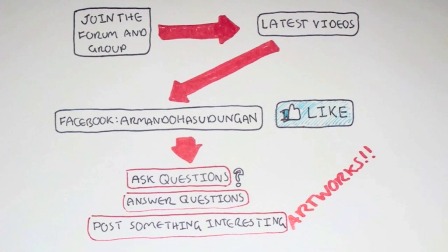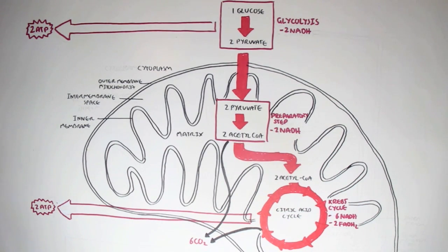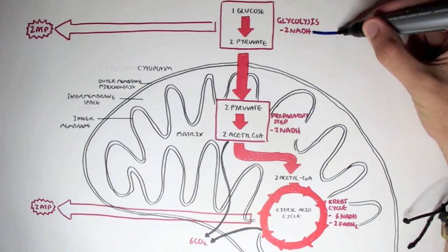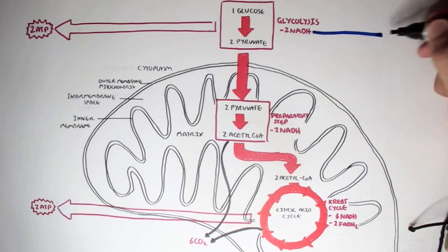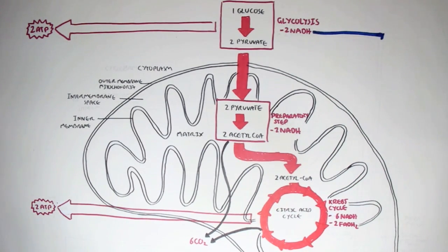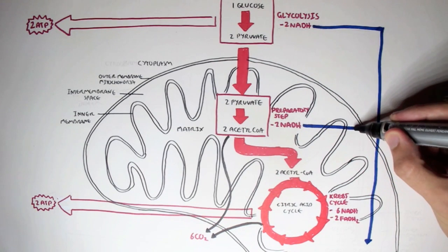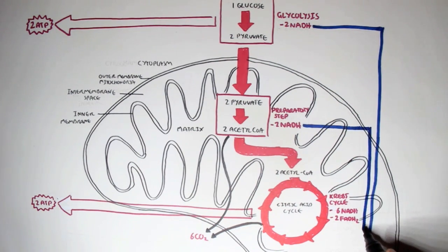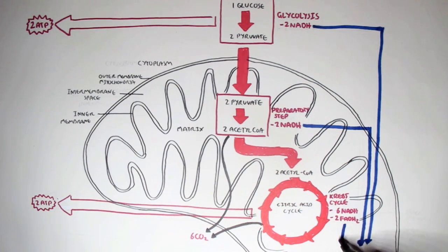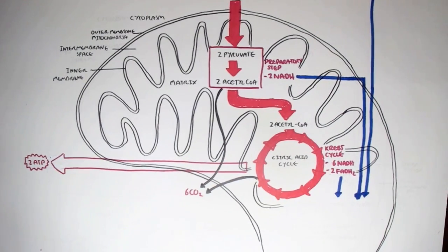In this video, we're going to continue on with the metabolism, the metabolic pathway, and look into the oxidative phosphorylation process, also known as the electron transfer chain. If you remember from glycolysis, we obtained two NADHs, and we also yield two NADHs from the preparatory step, and from the Krebs cycle, we yielded six NADHs and two FADH2s. They are electron carriers, and we use them to feed into oxidative phosphorylation, into the electron transfer chain, so that we can make ATPs — energy — out of them.